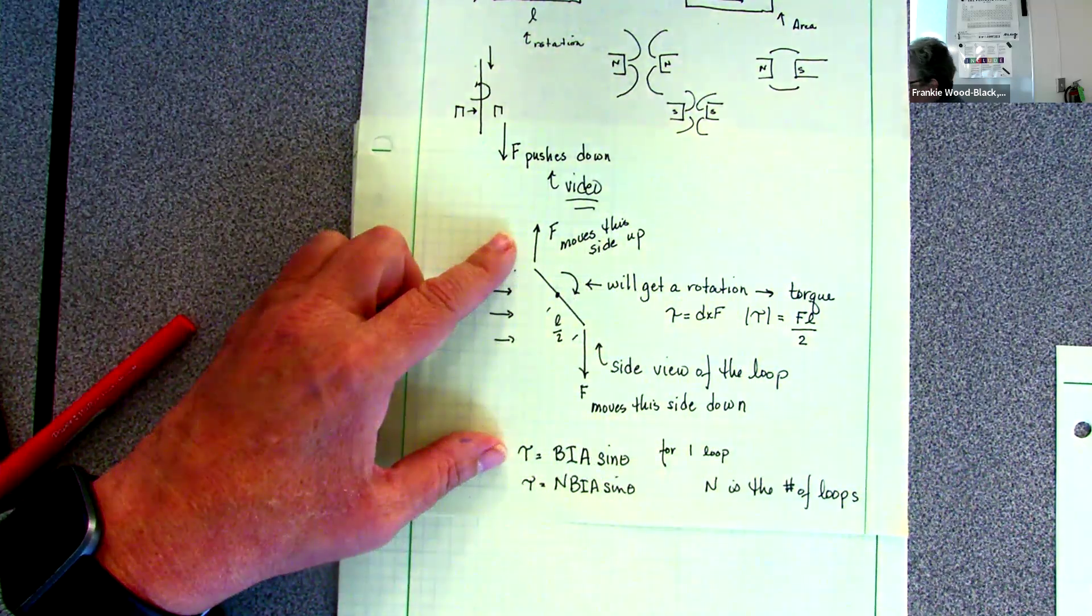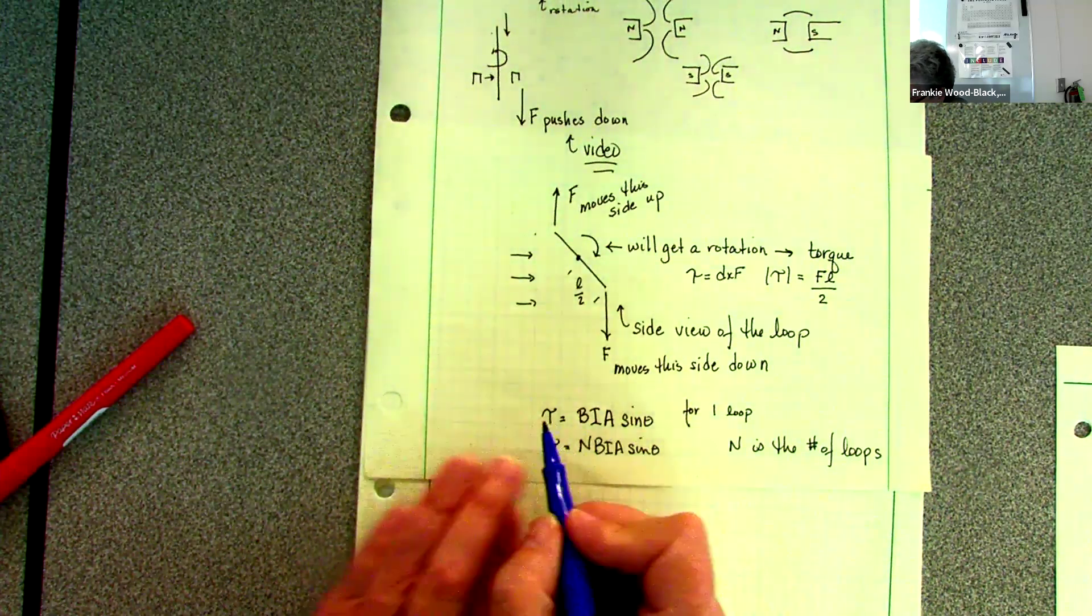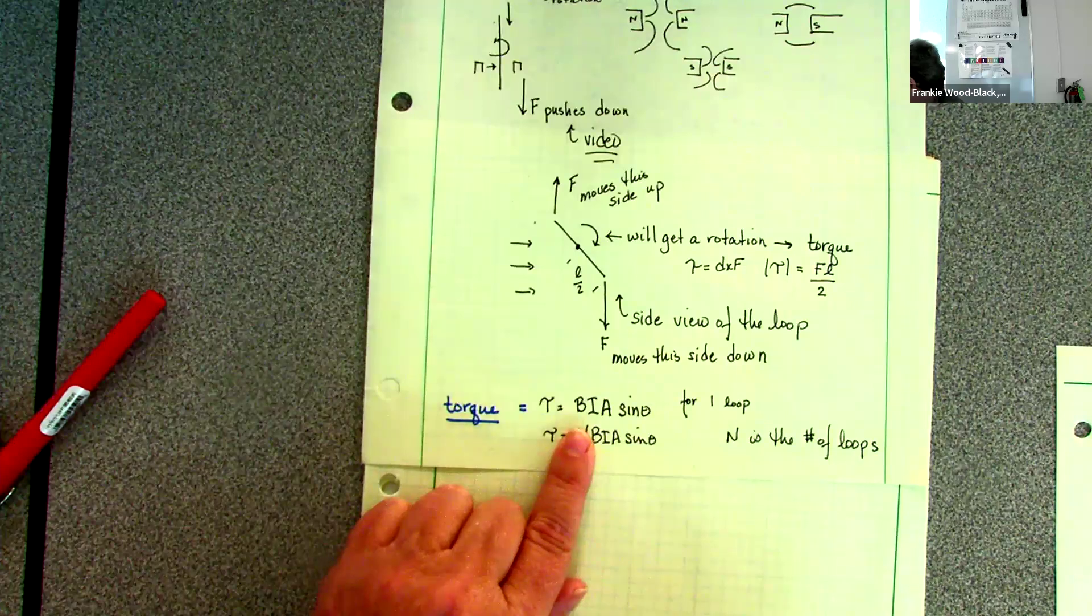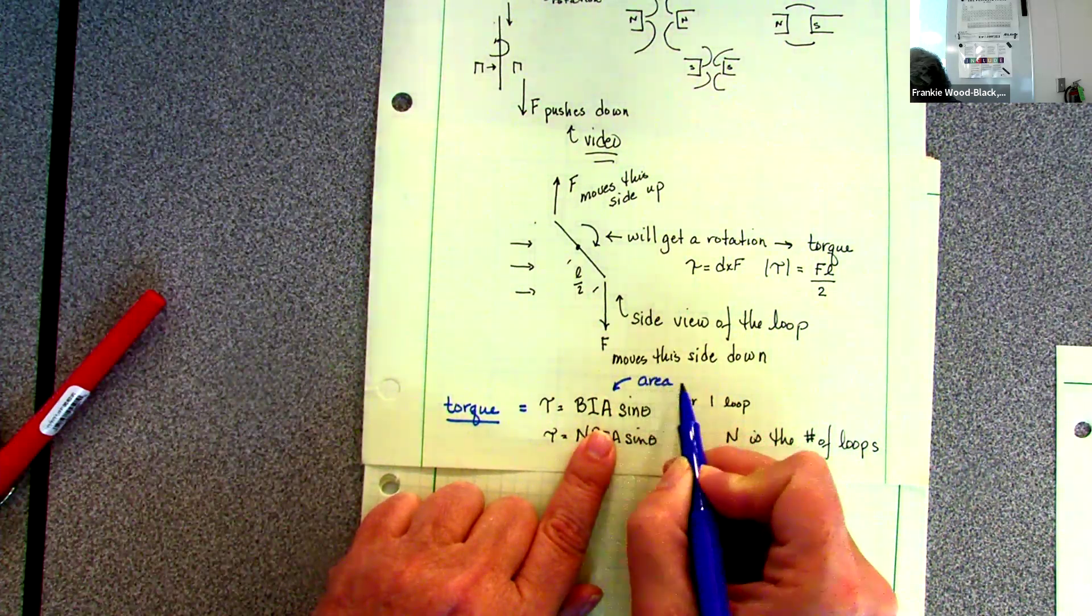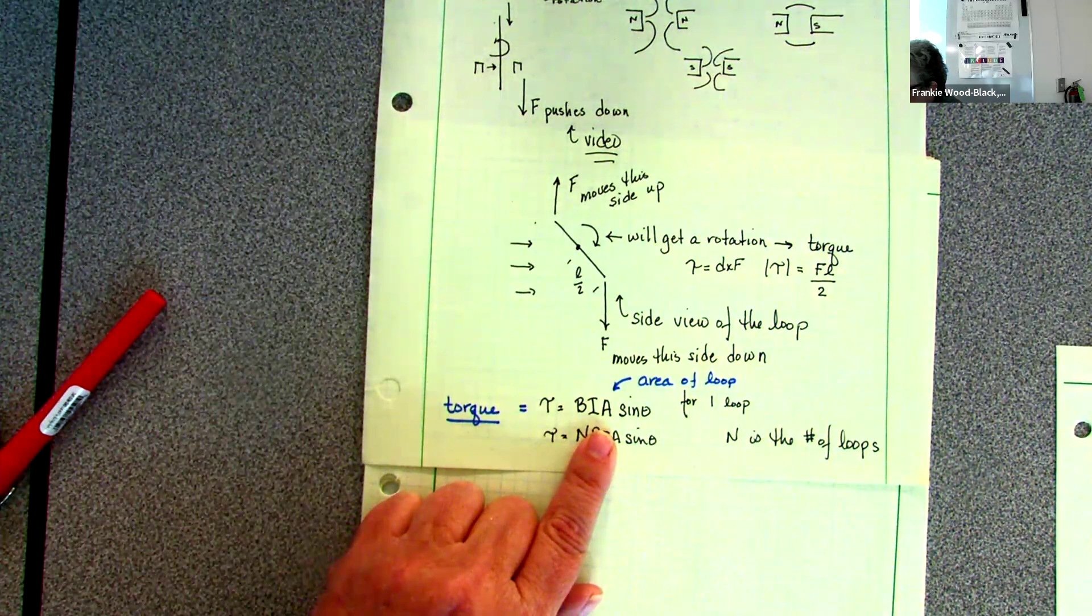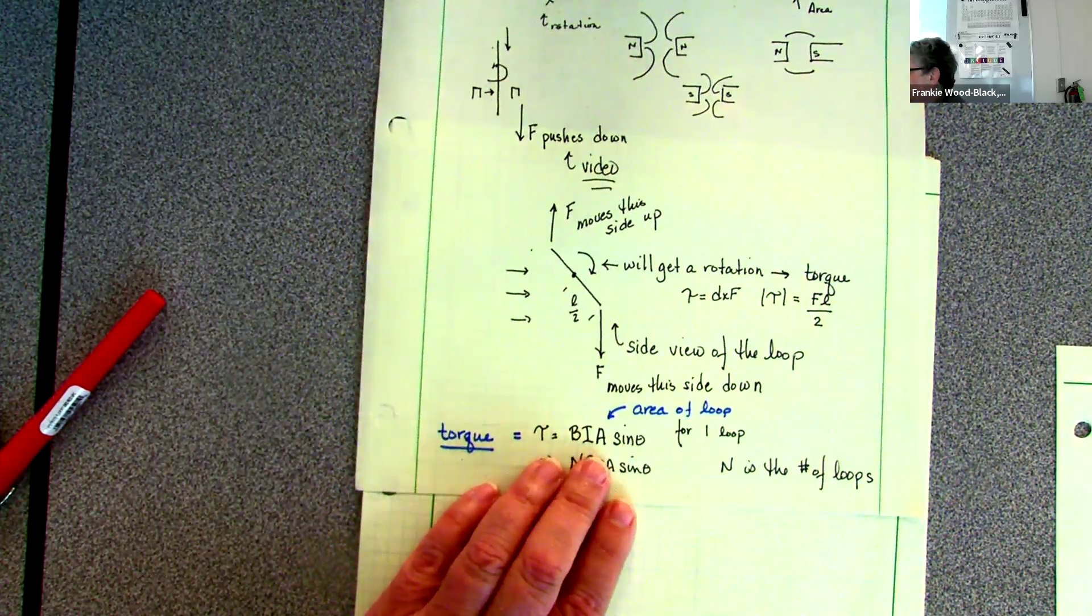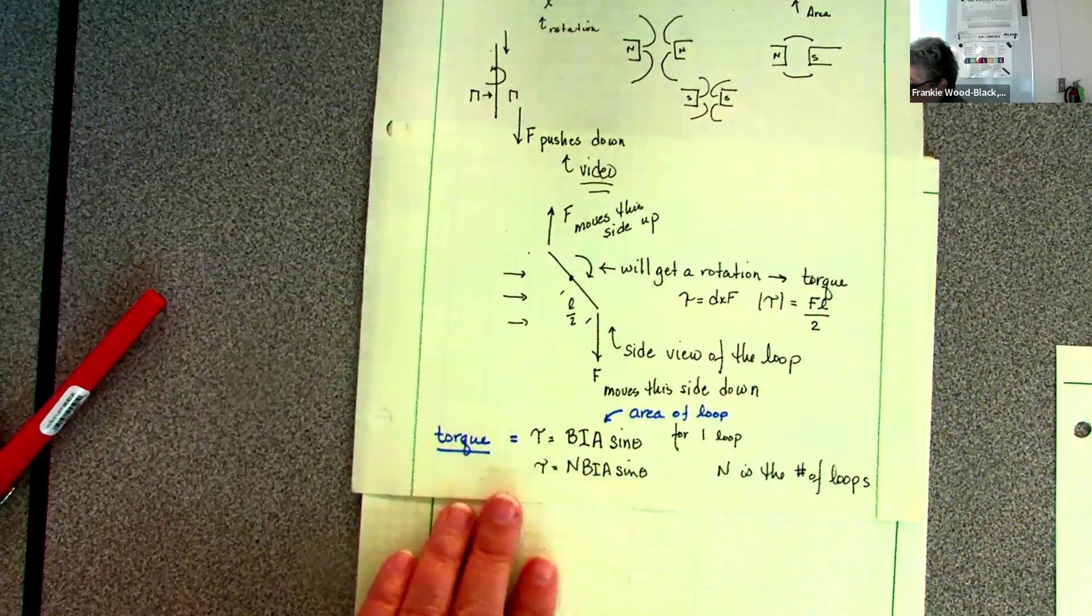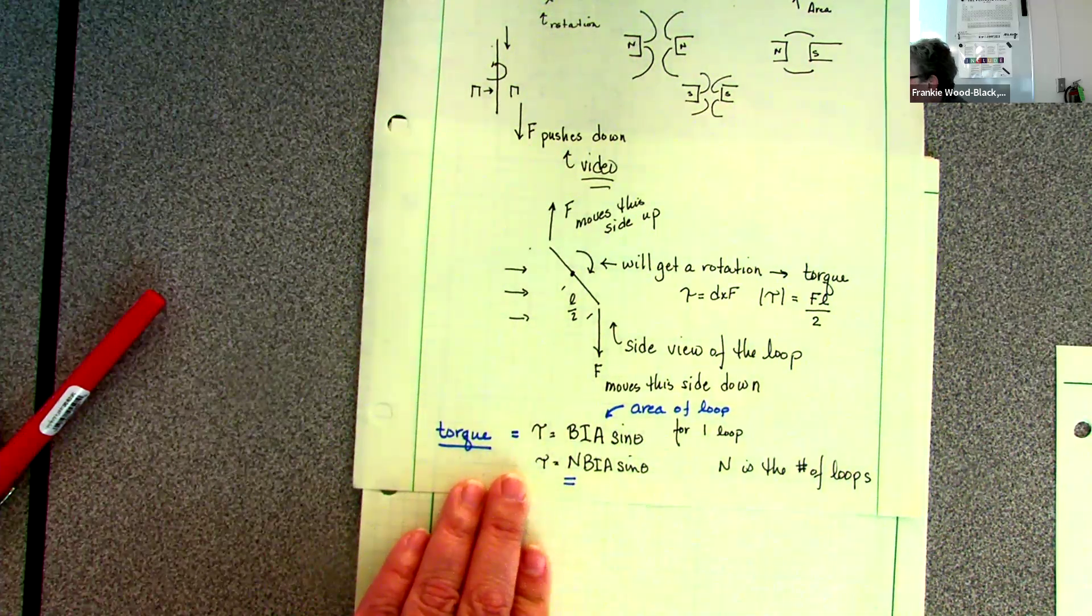In that direction, and so for one loop, the torque is the strength of my magnetic field times the current, and this is area of my loop. So we've extended it out to be able to take care of the area of the loop, which is going to be kind of nice because now I can do circular loops, I can do square loops, I can do rectangular loops. And if I want to expand it because I can add them up, this is related to the number of loops that we get.